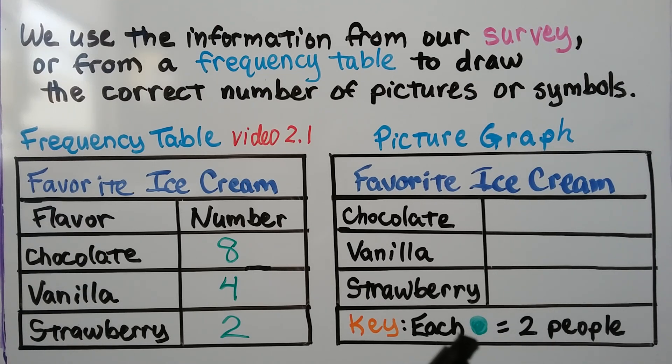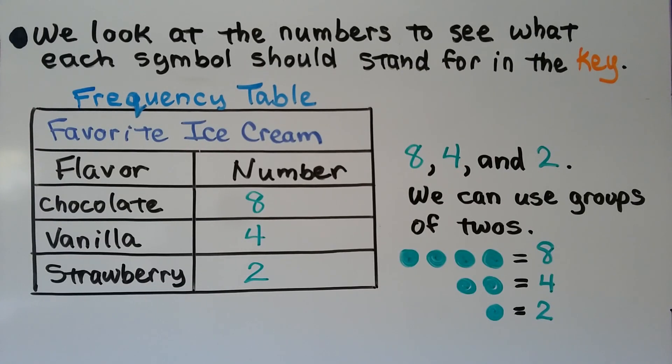We decide on what each picture or symbol represents. I'm going to have them represent and stand for two people when I make my picture graph. If your survey or frequency table has large numbers, you can have each picture stand for more.